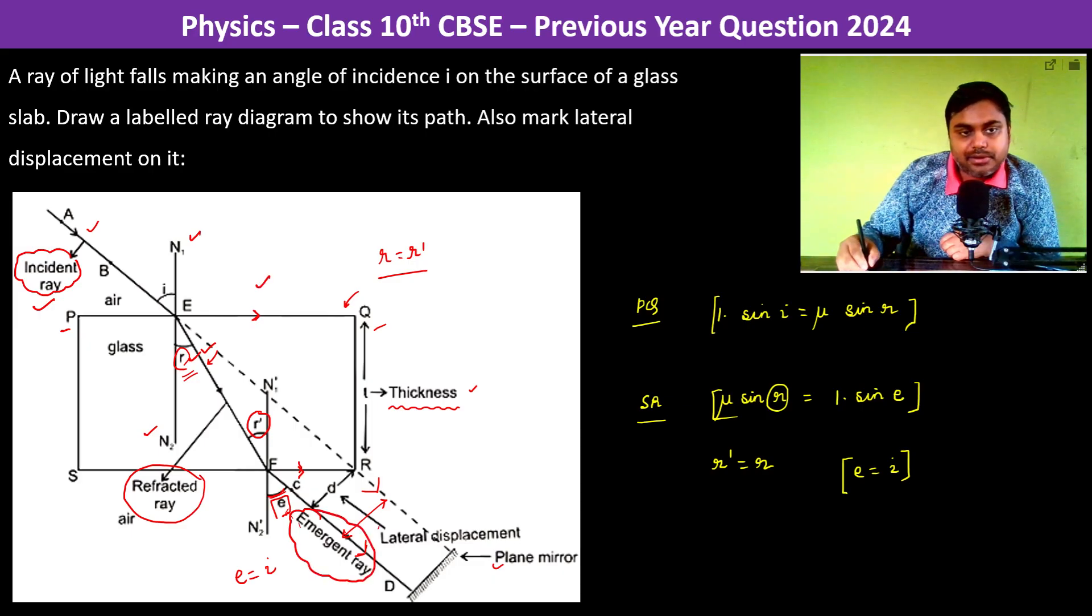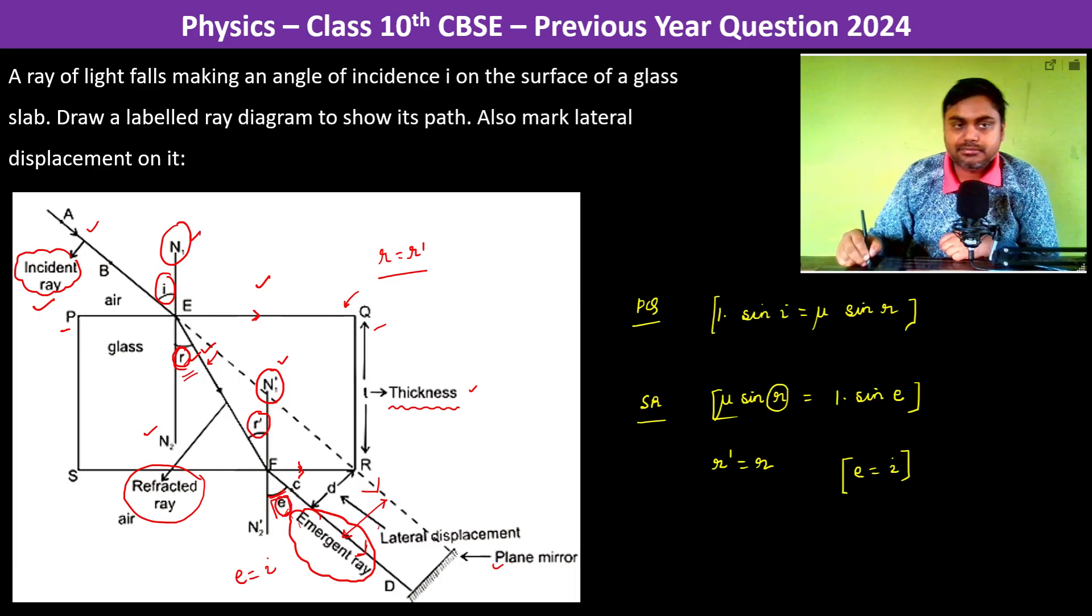On both the interfaces we have to mark the normals and also the incident angle, refracted angle, and the emergent angle. All of them should also be marked.